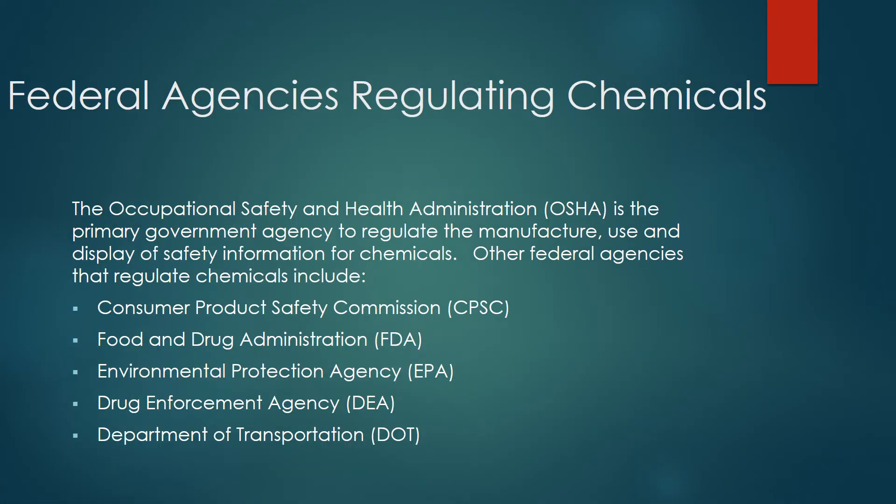The Occupational Safety and Health Administration, also known as OSHA, is the primary government agency to regulate the manufacture, use, and display of safety information for chemicals. Other federal agencies that regulate chemicals include the Consumer Product Safety Commission, the Food and Drug Administration, the Environmental Protection Agency, the Drug Enforcement Agency, and the Department of Transportation.